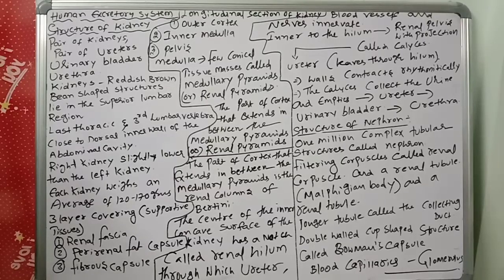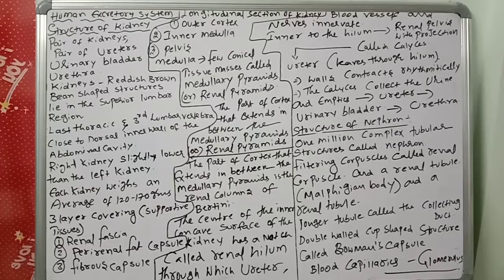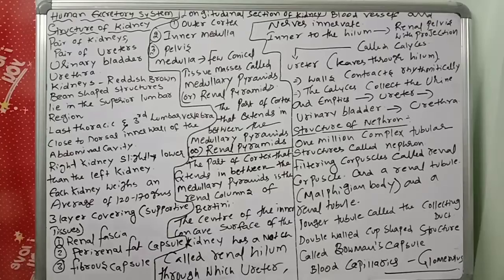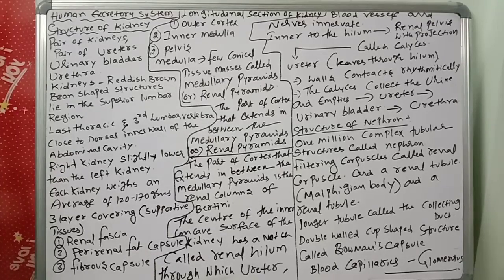We discussed the modes of excretion — ureotelic, ammoniotelic, and so on in the previous classes. Ammoniotelic organisms release ammonia, ureotelic organisms release urea, and uricotelic organisms excrete uric acid.